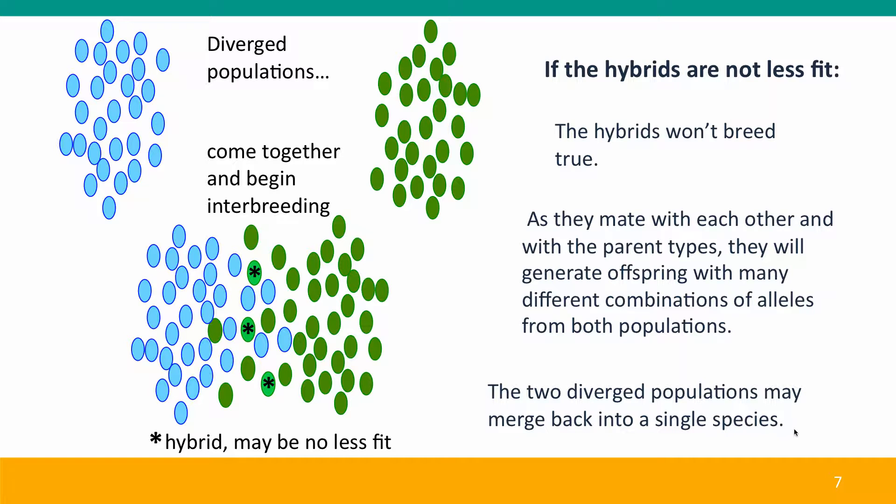Evolutionary biologists might refer to this as an unsuccessful speciation attempt, but that has the unfortunate connotation that speciation was somehow a goal, that it was directed, that the population was trying to speciate, and of course that's not the case. Evolutionary processes are largely blind to the consequences, they're not working towards a goal.